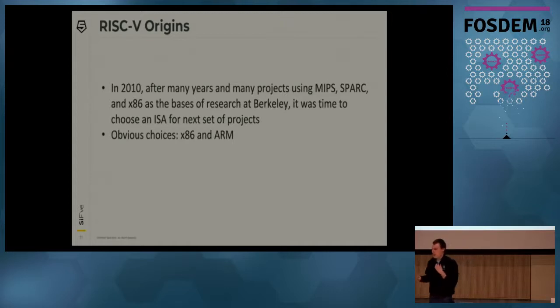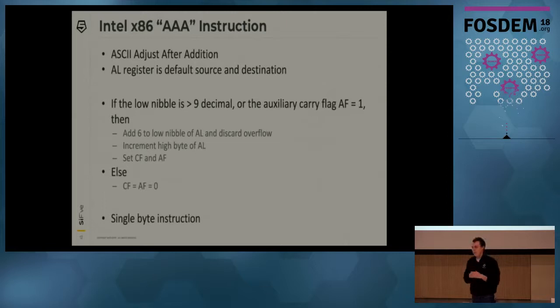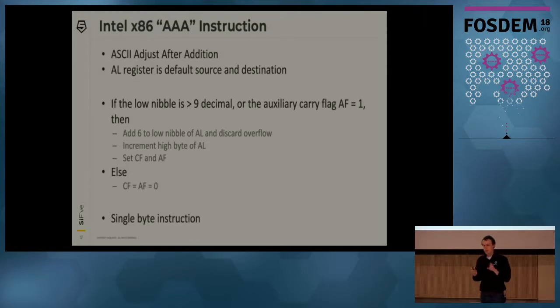x86 is the obvious choice, because it had the vast majority of software support. Let's look at the first instruction in the x86 manual, which is the AAA instruction. This instruction is great if you're trying to build a calculator, which was actually what the x86 was originally designed for. It does binary coded decimal support. This is a single byte instruction on modern x86 systems. I found out that the 286 had a bug in its AAA implementation, and we've maintained compatibility with that bug until today. If Intel can't even get x86 right, how are we going to do it?